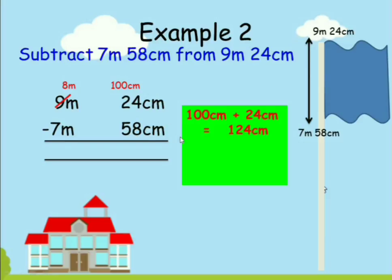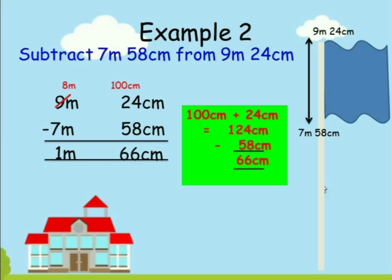Now you can remove 58 centimeters from 124 centimeters — you will get 66 centimeters. You are left with 8 meters; remove 7 meters from 8 meters and you get 1 meter. So anytime you borrow from meters to centimeters, bear in mind that one meter becomes 100 centimeters at the centimeters place, because 100 centimeters is 1 meter.